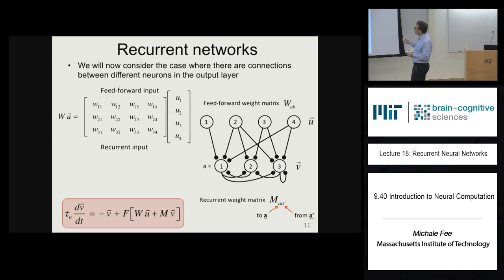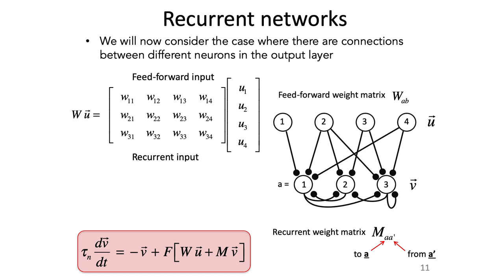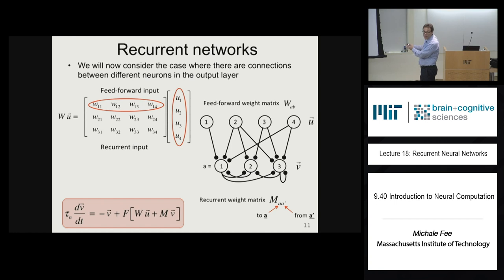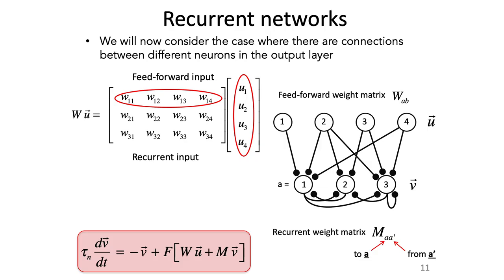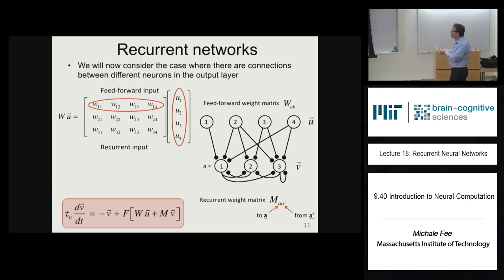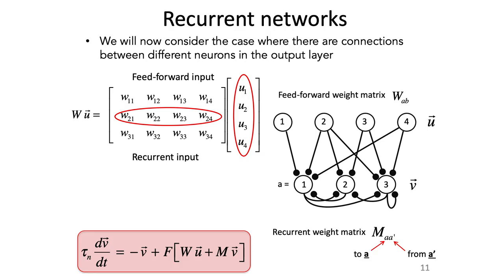We've seen this before. The product of the weight matrix times the vector of input firing rates: the input to the first output neuron is the dot product of the weights onto that neuron — that row of the weight matrix — with the vector of input firing rates. The feedforward contribution to this neuron is the dot product of that row of the input weight matrix with the vector of input firing rates.